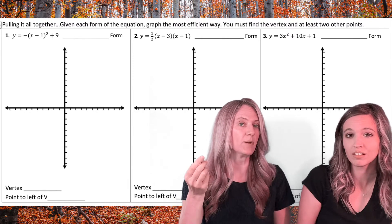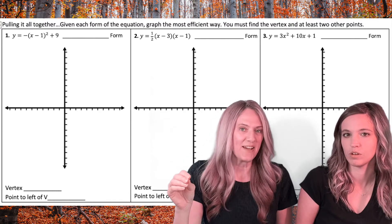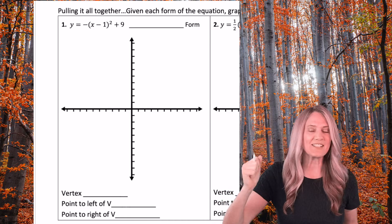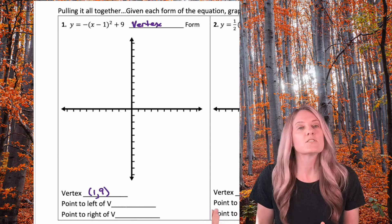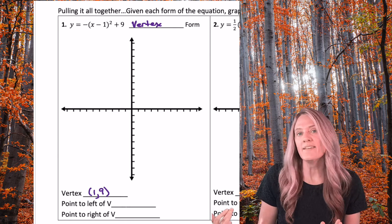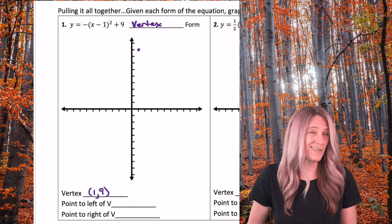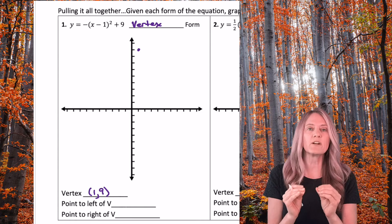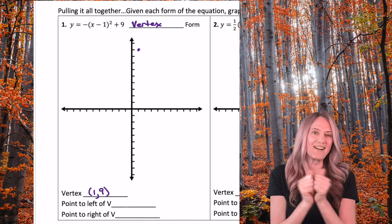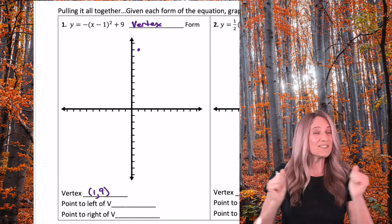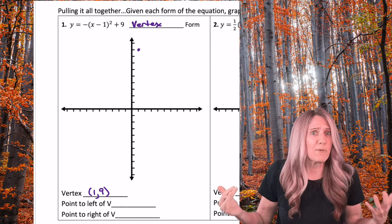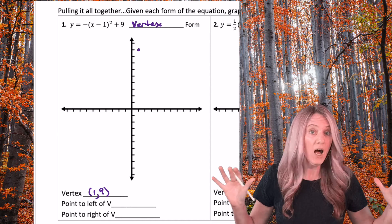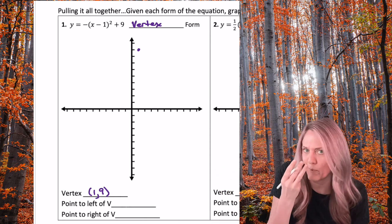So we want to go ahead and graph the three problems as efficiently as possible. Try the first one, then come back. Look at this one — what form is it? Vertex! I already have the vertex. Let's be efficient: inside opposite, outside same, vertex is at (1, 9). Plot the point. Someone might think this is super hard, but we have our pattern points. For our parent function: from the vertex, over 1 up 1; over 2 up 4; over 3 up 9. We can keep going — over 4 up 16, over 5 up 25. We only need three points: the vertex and two others.